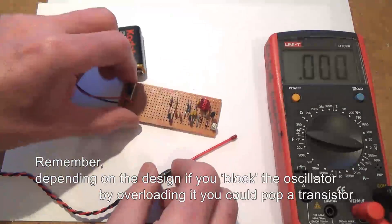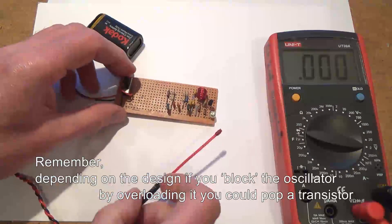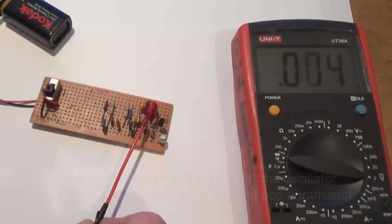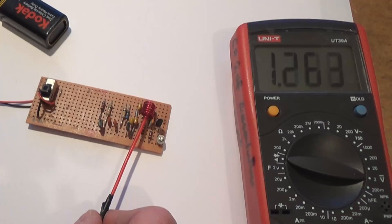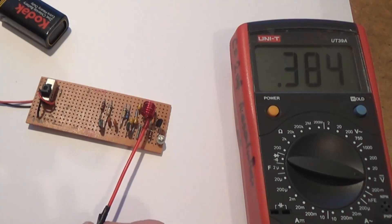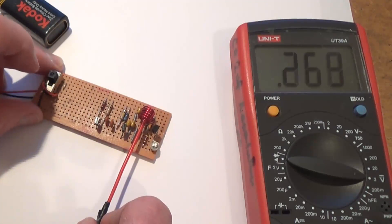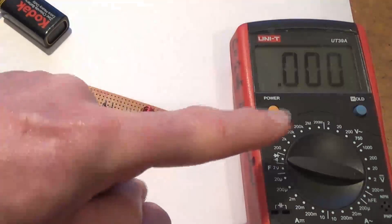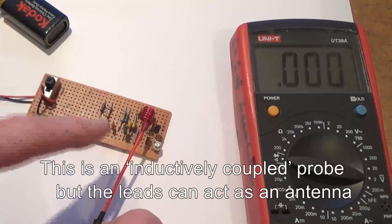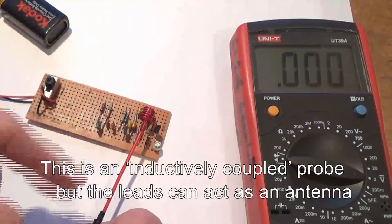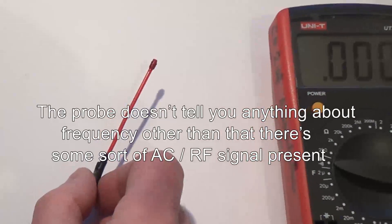Remember, depending upon the design, if you overload the oscillator you could block it and pop a transistor off, so be careful. And again, a much bigger coil on this one - you can see we're getting a lot more voltage developed in the probe. If it's not oscillating you won't get a reading. Having said that, depending on what coil you make and the size of it, it can pick up your mobile phone or any other extraneous radio frequencies in the vicinity.